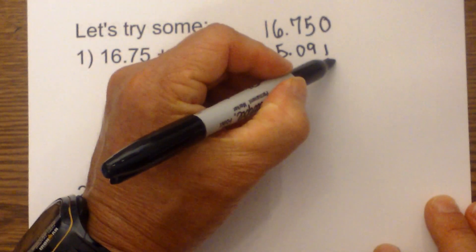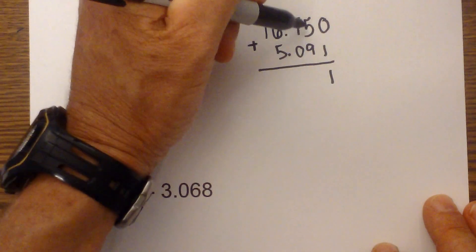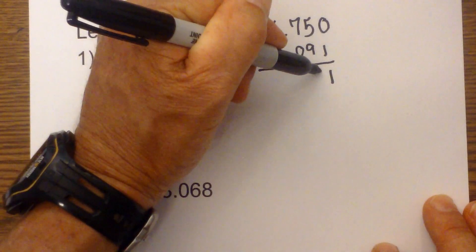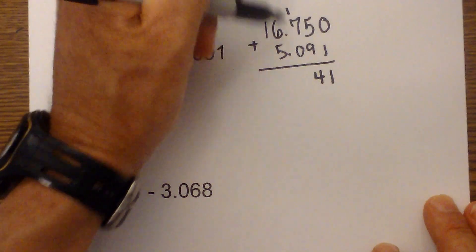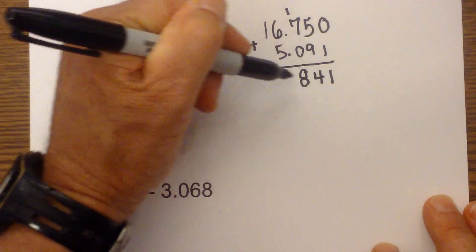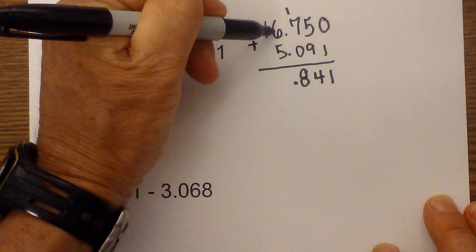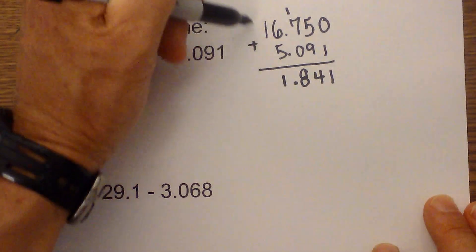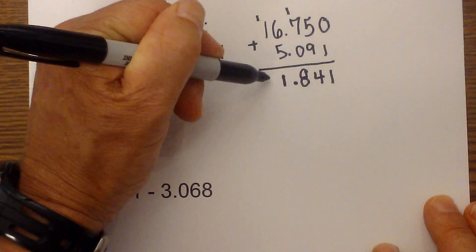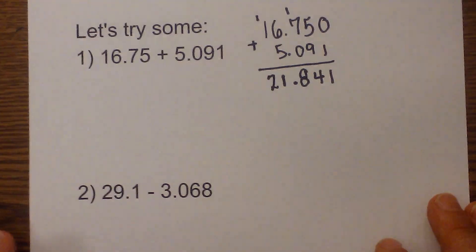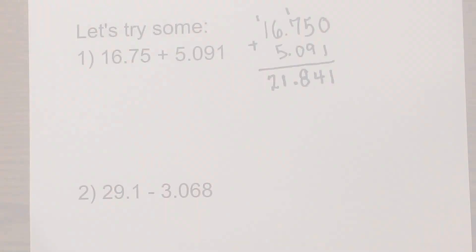Now this is addition, so I just add. One plus zero is one, nine plus five is fourteen, remember to carry the one. Seven plus one is eight, bring down the decimal. Six plus five is eleven, carry the ten over, so that becomes 21.841. Notice I lined up the decimals and then just added.